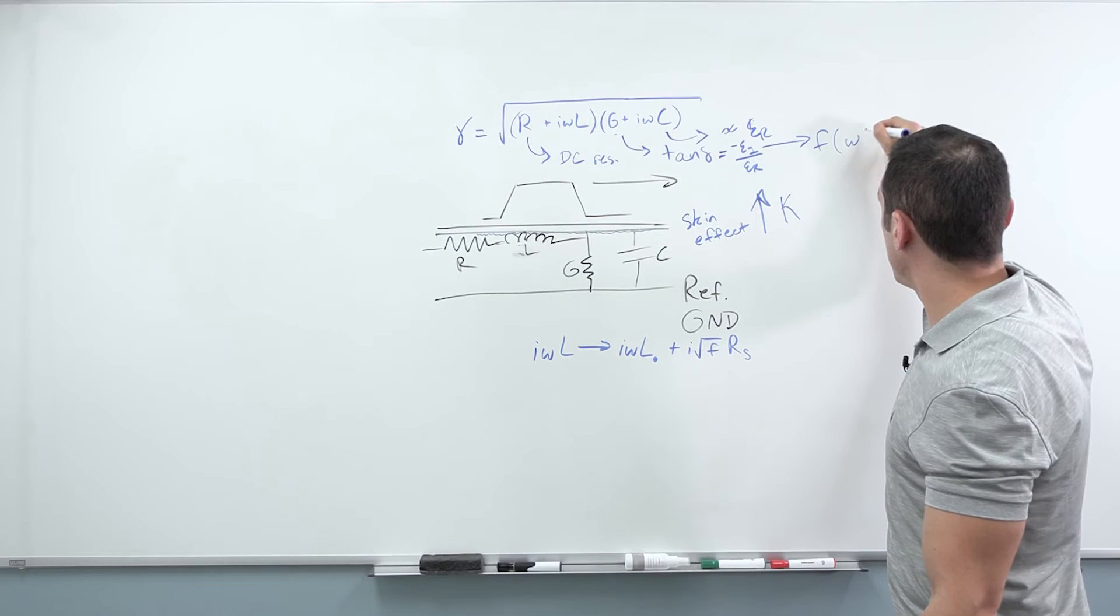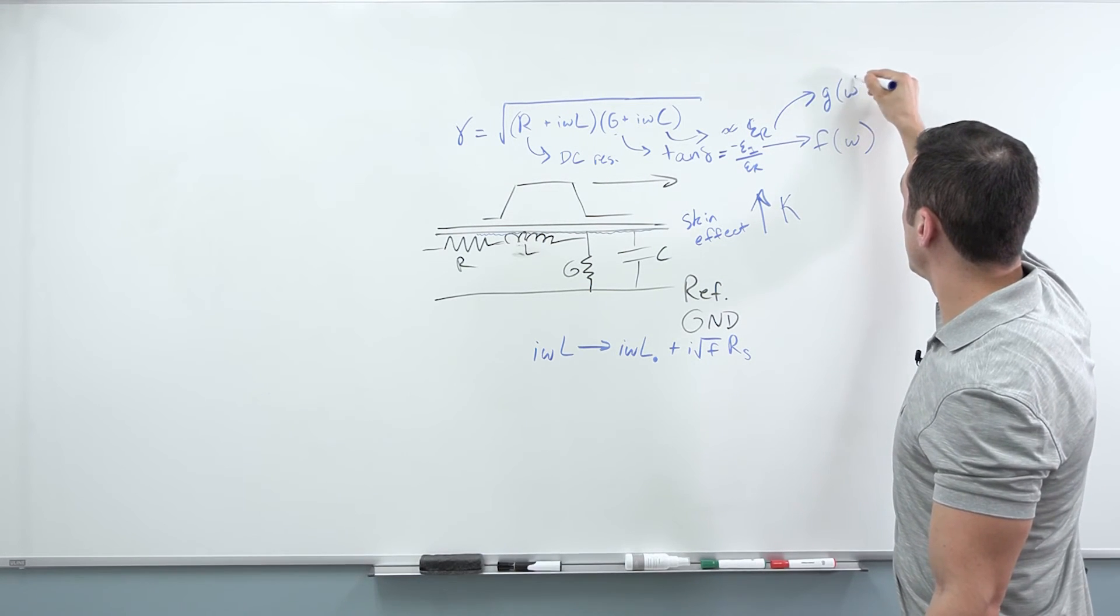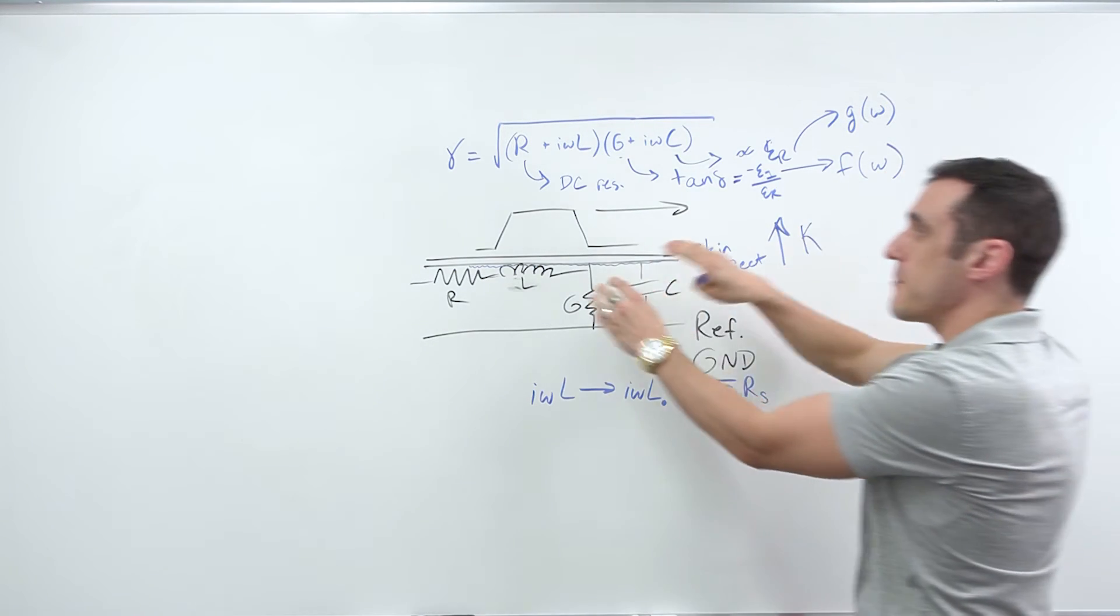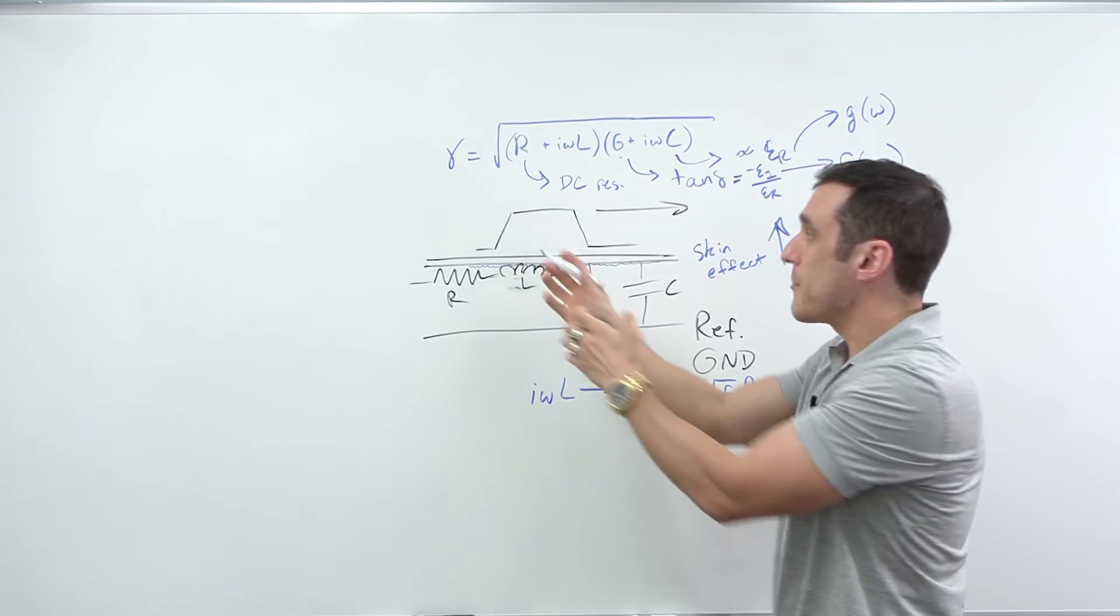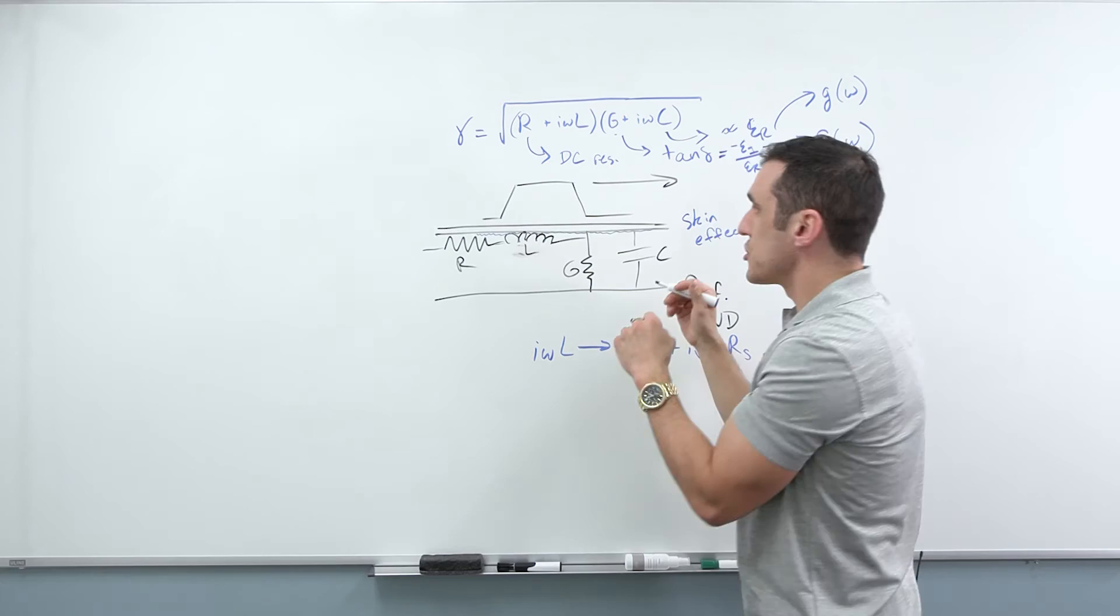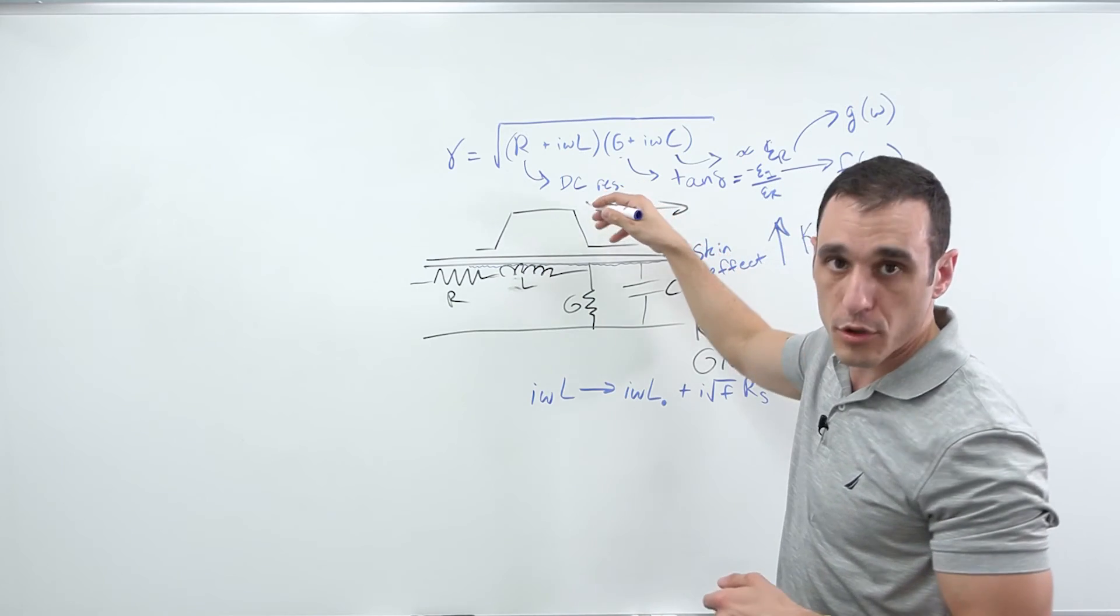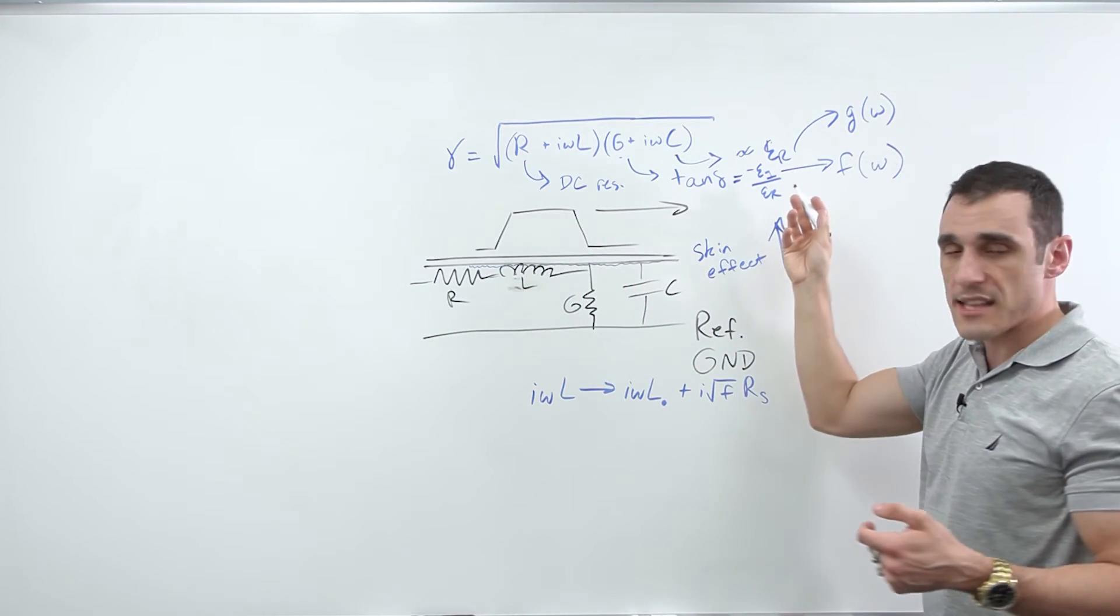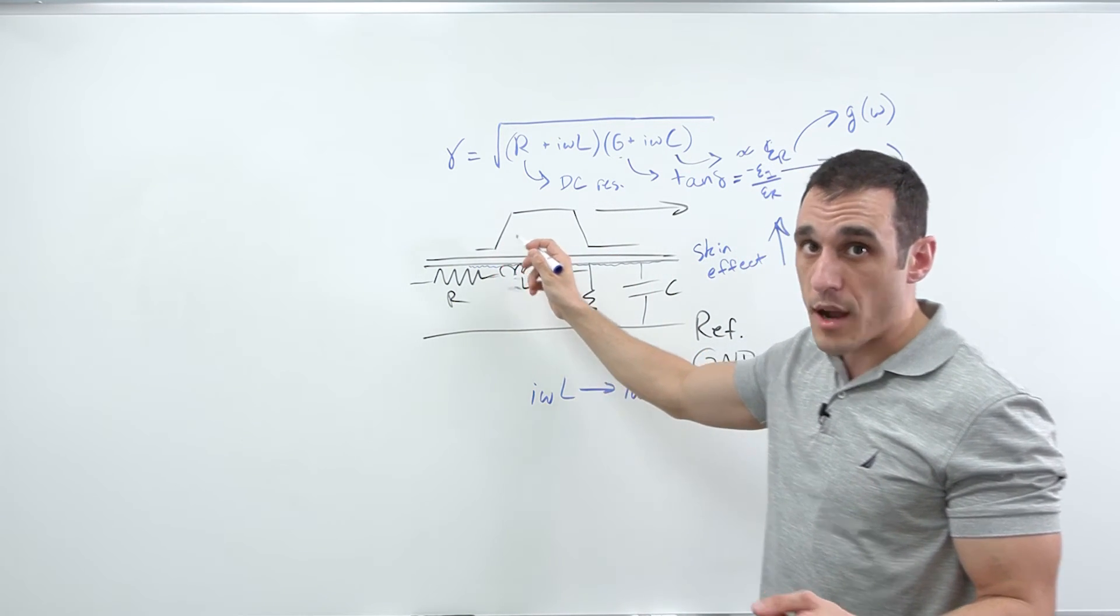Now that's very important because this term is a function of angular frequency. This term is also a function of angular frequency. So they're both going to change at different frequencies. And so what that means is that different frequency components that make up your digital signal will propagate at different velocities along this interconnect. So you might have the high frequency component in your digital signal propagating a bit slower than your low frequency components.